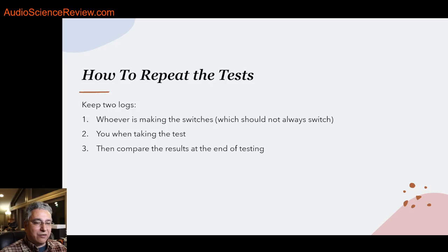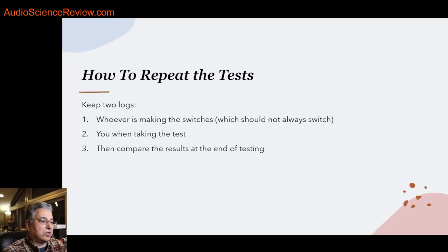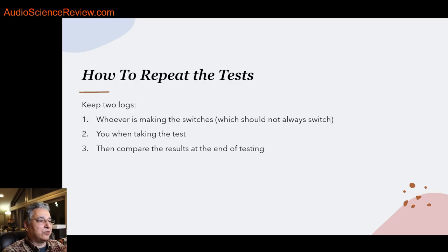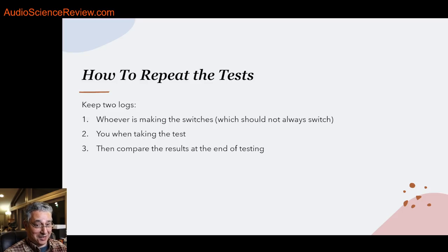If you want to do this test, do it 8 or 10 times. My suggestion is to keep two logs. Whoever is doing the switching should keep a log and make sure that sometimes they switch, sometimes they don't. Use random number generators online to create a randomized sequence of A and B — it could be A, A, A, B, B, B, A, B, A, whatever. It should be randomized; if it's not, you're violating the statistical principles. They keep a cheat sheet and you write down your answers. At the end, compare the two and see how many you got right. If you didn't get nine out of 10, you just learned something important about audio.